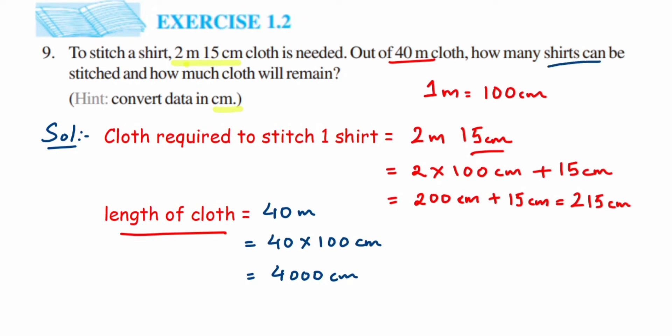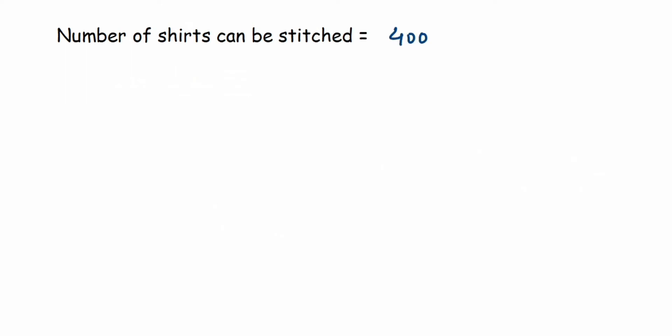Now we find how many shirts can be stitched and how much cloth remains. The remainder is what we get after dividing. The number of shirts that can be stitched is 4000 divided by 215. Here 4000 is the dividend and 215 is the divisor. We don't know the 215 table, so we'll use trial and error.